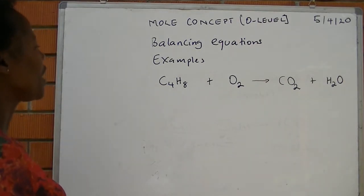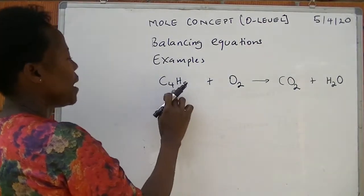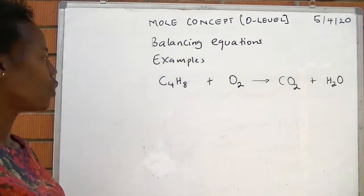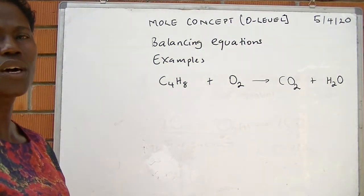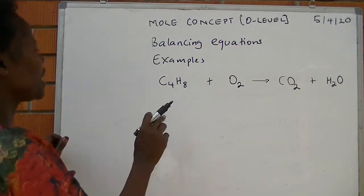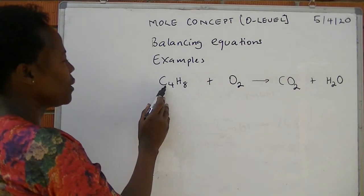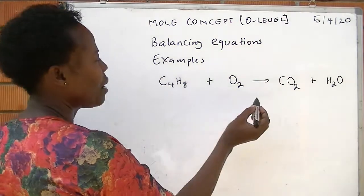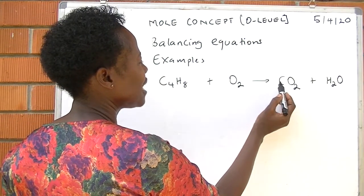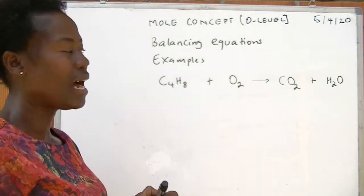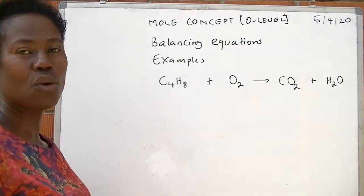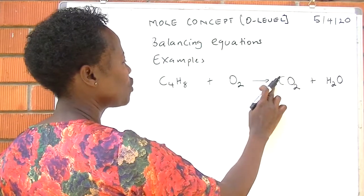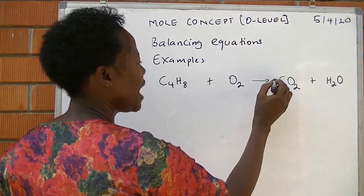For example, butane is combusted in oxygen to give carbon dioxide and water. When balancing, look at each individual atom. Beginning with carbon: on the reactant side we have four times one, which is four carbon atoms. On the product side, one times one is one. To make four carbons on the product side, we multiply by four and place it in front of the carbon dioxide molecule.